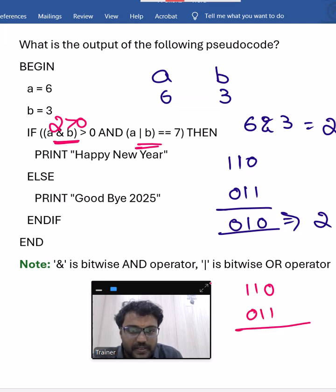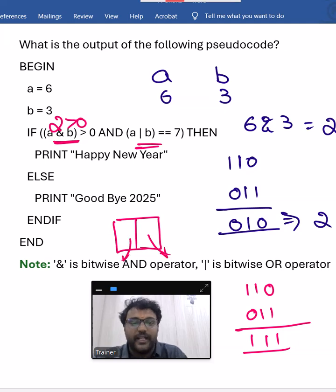So when you do OR operation here, OR operator - if anyone is 1 then it is 1 only. OR operator is like a door. If you have 2 doors for a room. If this is open you can enter. If this is open you can enter. If both are open also you can enter into the room. OR operator is in that fashion.